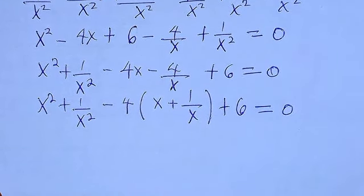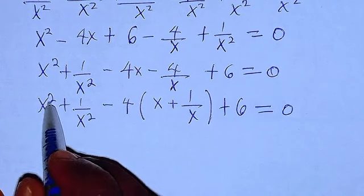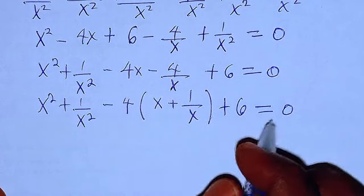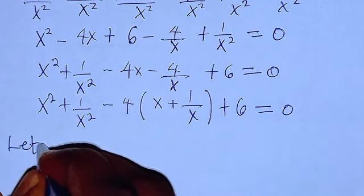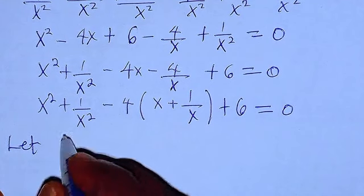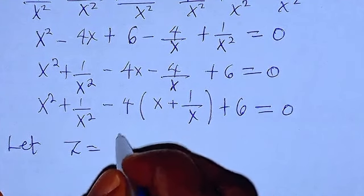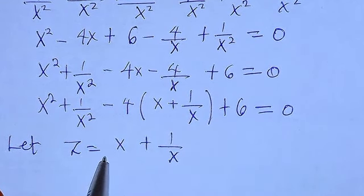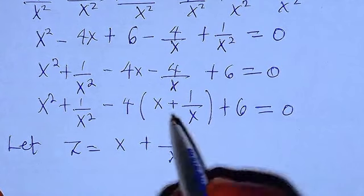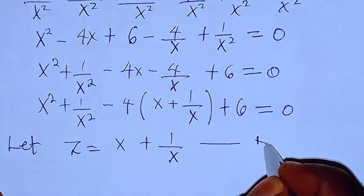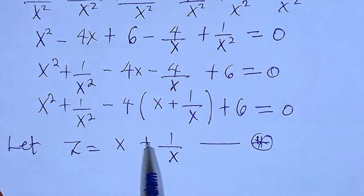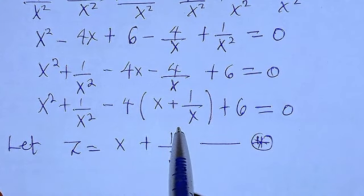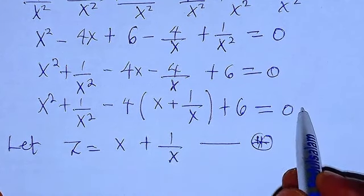The equation is x squared plus 1 over x squared minus 4 times (x plus 1 over x) plus 6 equals 0. Let z equal x plus 1 over x — call this equation (star). We will replace x plus 1 over x with z in this equation.